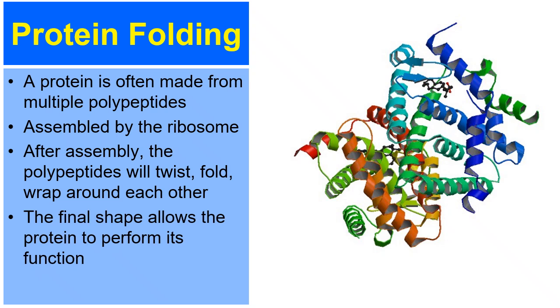And so the final shape, as we said a few times, allows the protein to perform its function. So it's very crucial that these polypeptides twist and fold and wrap properly in order to make a protein.